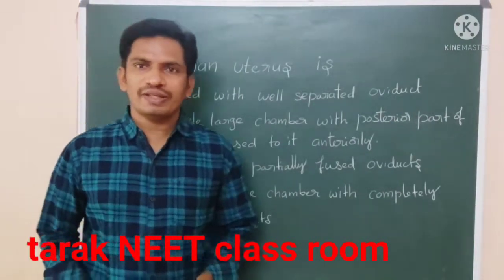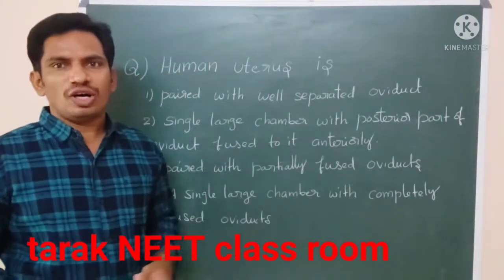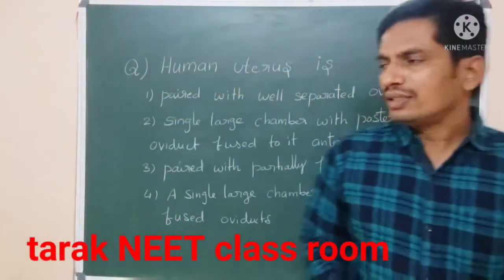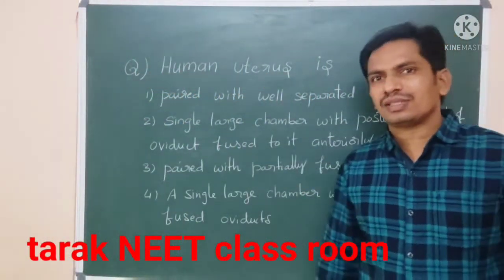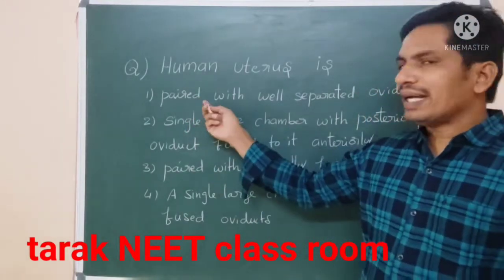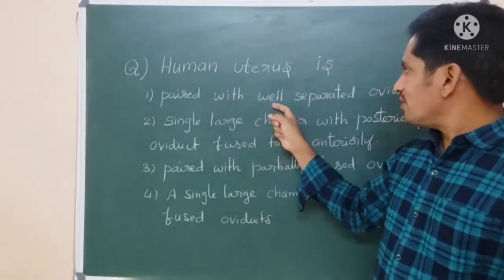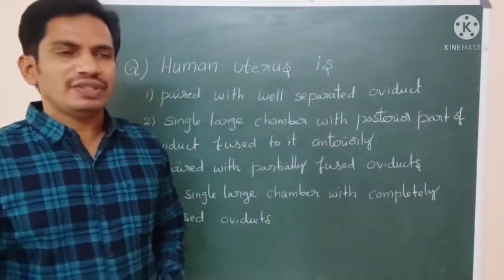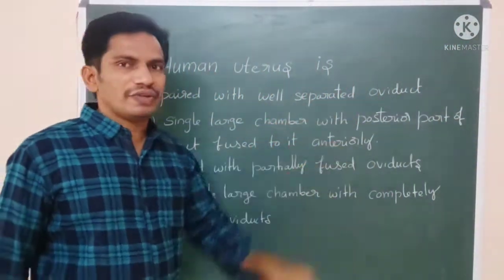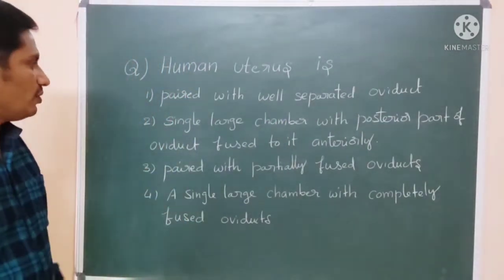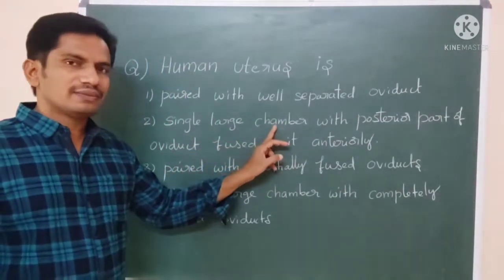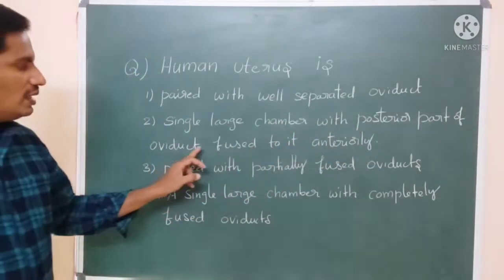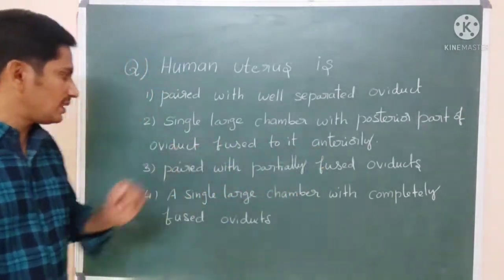Hi students, good evening. Today's objective is: human uterus is — and here they have four options. First option is: it is a paired organ with well-separated oviducts. Option two is: single large chamber with posterior part of the oviduct fused to it anteriorly.